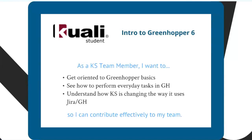Finally, I want to understand how KS is changing the way it uses JIRA and Greenhopper. We're making some changes to improve our efficiencies, to make it easier for a team member to understand what they need to do in Greenhopper, and to cut down the number of fields that you have to fill out to populate the basics of what we need for project and team management and planning. Some of the changes are also just necessitated by Greenhopper itself, all so that we can contribute effectively to our team.